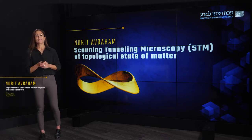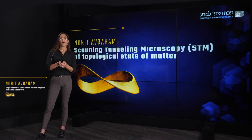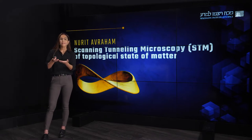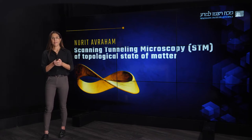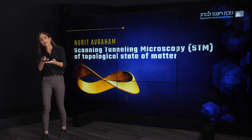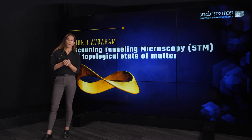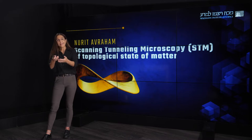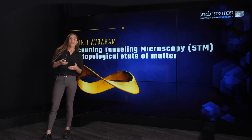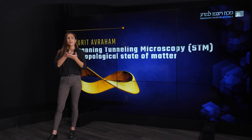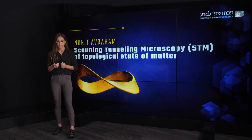Hi, my name is Nurit Avraham from the Weizmann Institute of Science. In the following unit we will talk about scanning tunneling microscopy and spectroscopy of topological states of matter. One of the hallmarks of topological states of matter is the existence of unique topological surface states on the material surfaces and boundaries — states that exhibit unique properties and cannot be realized as standalone systems, but only when coupled to topological bulk. The use of scanning tunneling microscopy, which is a surface probe, to study these materials is kind of a match made in heaven. It allows us to visualize those unique states and to characterize them both in real space and in momentum space.